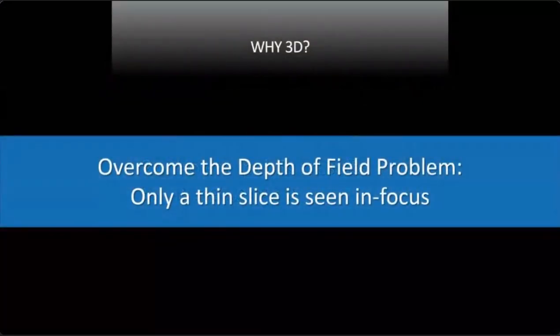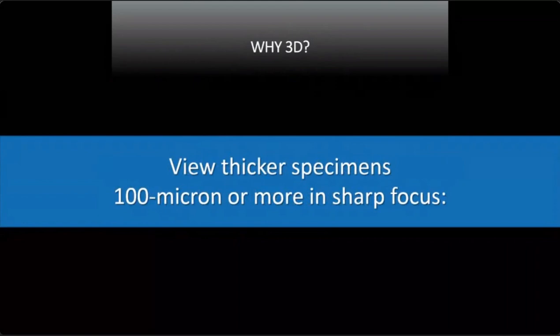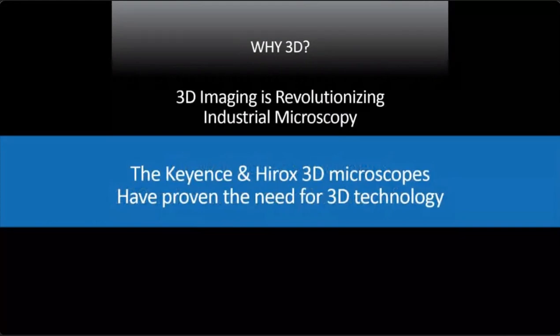One of the key benefits of 3D: the big problem with light microscopes is the depth of field problem — only a thin part of the specimen is in focus at any one time. With this system, you can view much thicker specimens without making five-micron sections. You can put pretty much any object in and look at things more than 100 microns, all in sharp focus — as you saw, 750 microns from top to bottom in that last image.